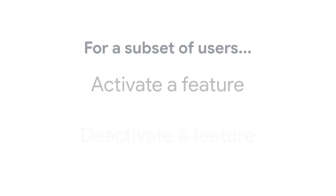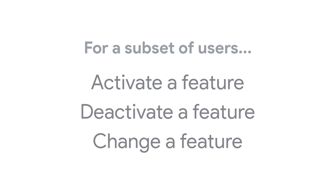Chrome Variations enable Chrome to activate a new feature, deactivate a feature, or to try out a change to a feature for a subset of users. By feature, I just mean anything in the way Chrome works — that could be a performance enhancement to the application code, a change to the way the browser looks or functions, or occasionally even a change to a JavaScript API.